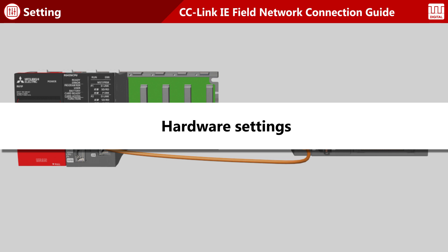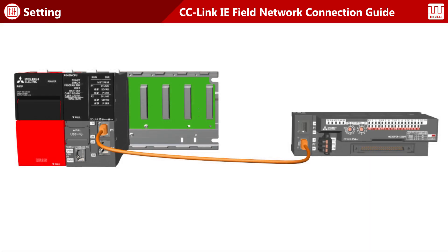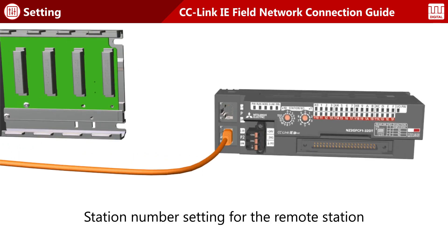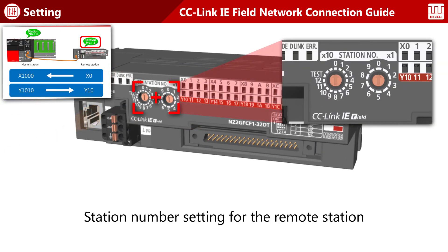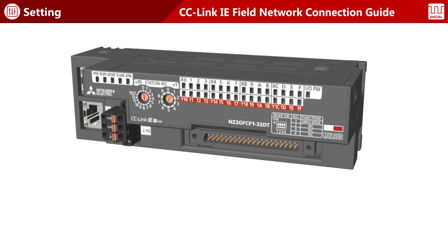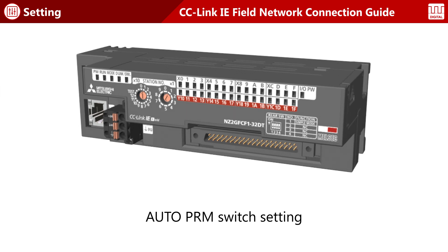The procedure for hardware settings is described. Station numbers for remote stations are set using the switch on the front of the module. The remote station is station number one, so set the station number to one. Now, enable the function that simplifies the setting procedure for typical operations.